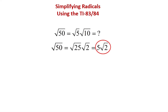However, if you factor 50 as 25 times 2, radical 50 becomes radical 25 times radical 2. The square root of 25 is 5, and your simplified expression is now 5 radical 2.